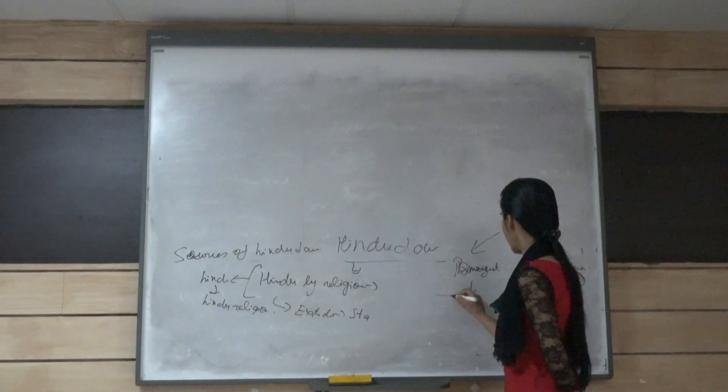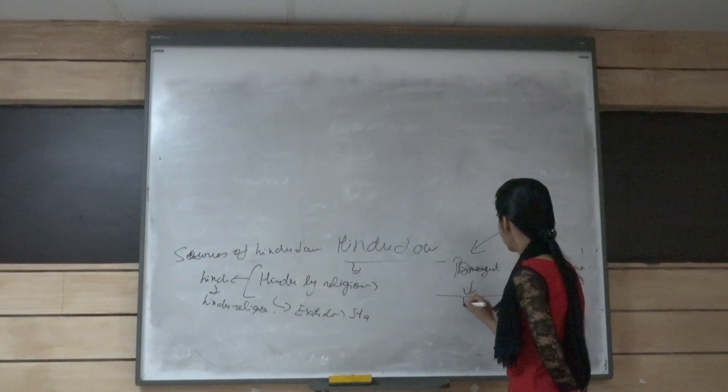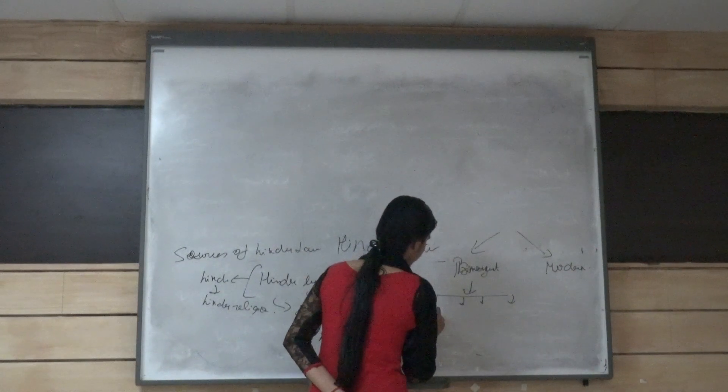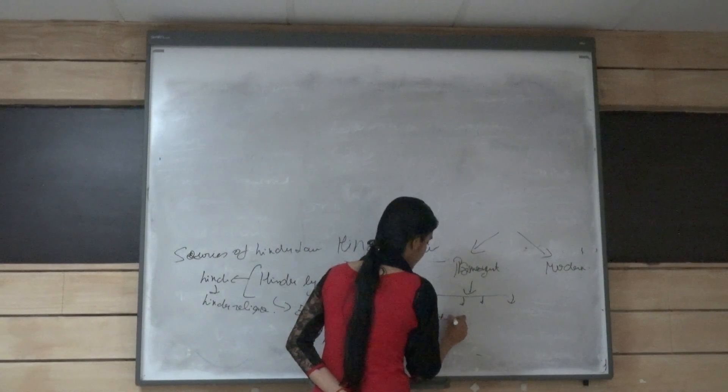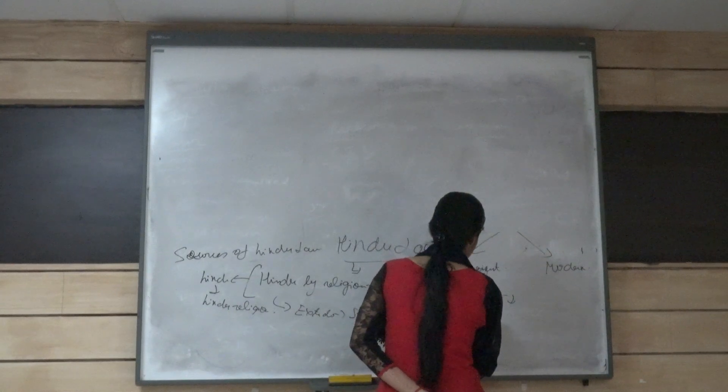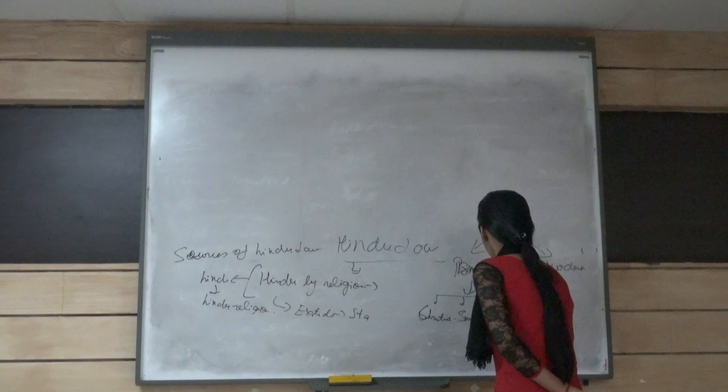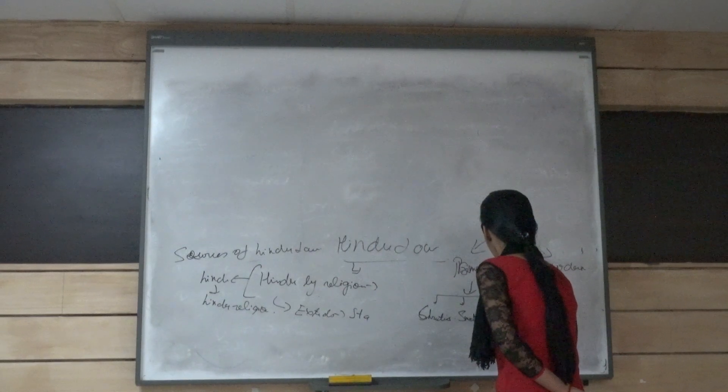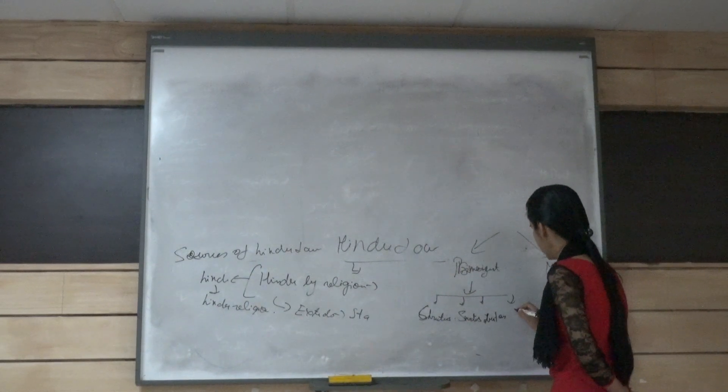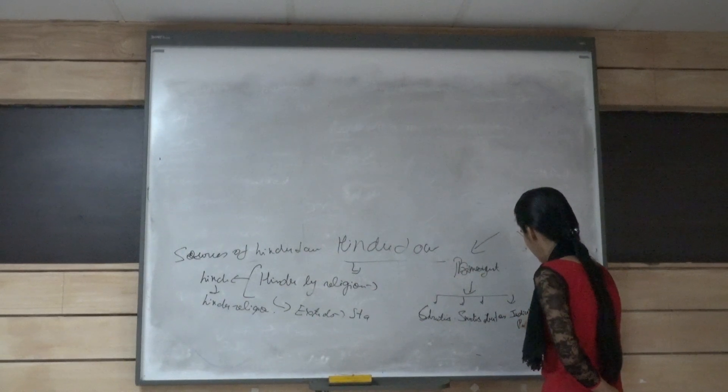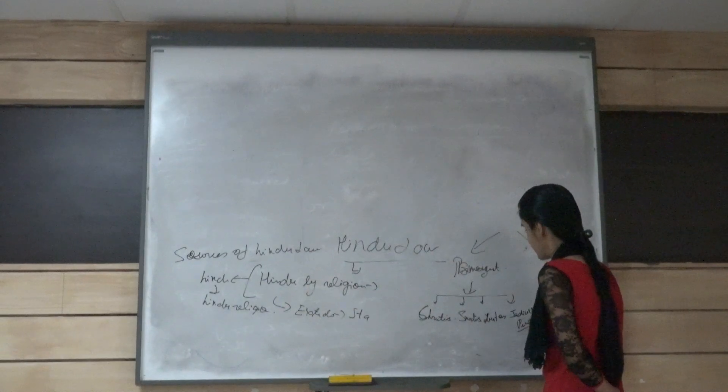The ancient sources can be further classified into four types. First is the Shrutis, second is the Smritis, third is the customs and the fourth one is the judicial principles.